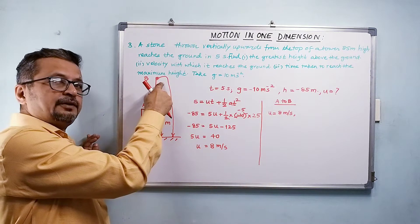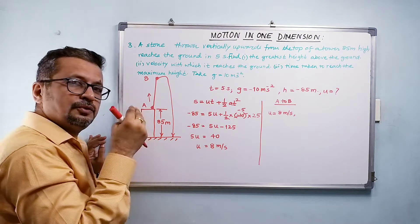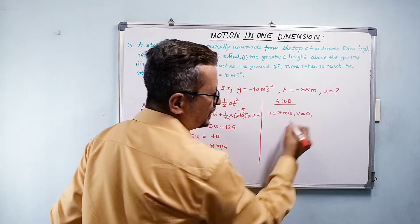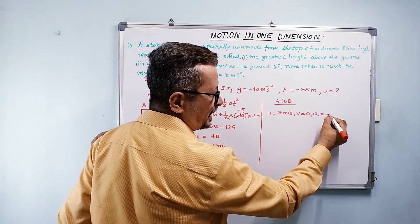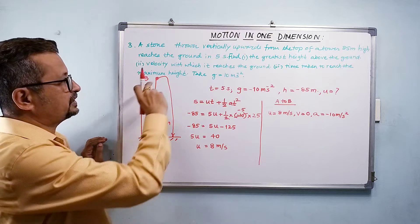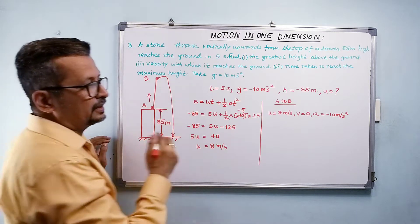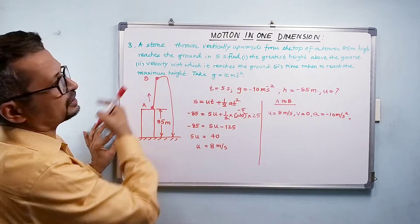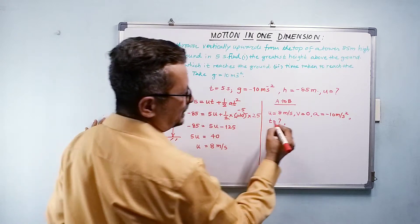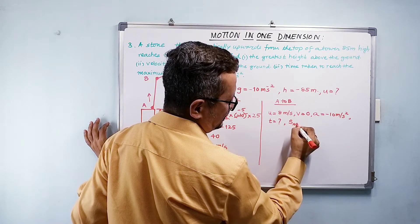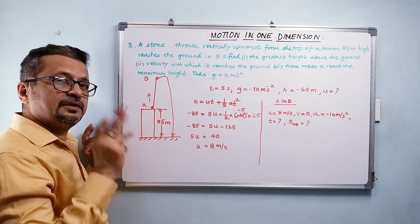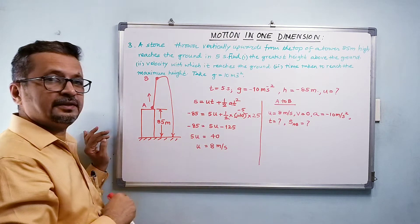Now I know the initial velocity. For motion from A to B: u equals 8 meter per second. The velocity at B is zero because it is the maximum height. Acceleration equals minus 10 meter per second square. We want the greatest height above ground, so we'll find distance AB and add 85 to it. We also want the time taken to reach maximum height.